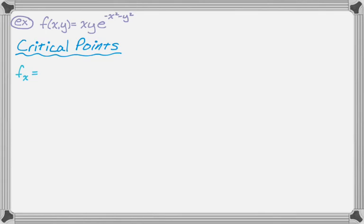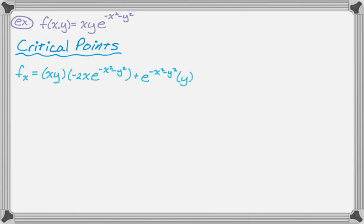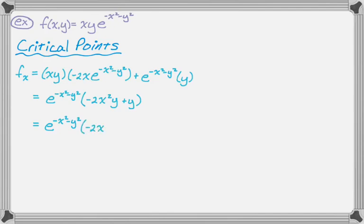For partial x, I'm going to treat the function as (x·y)·e^(−x²−y²). Using the product rule: first times derivative of the second — where x is the variable — is negative 2x·e^(−x²−y²), plus second times derivative of the first, which is e^(−x²−y²)·y. Factoring out e^(−x²−y²), we get e^(−x²−y²)·(−2x²y + y), which factors further as e^(−x²−y²)·y·(−2x² + 1).